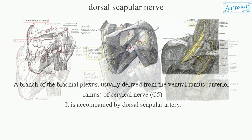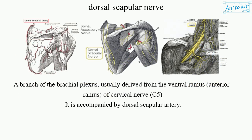Dorsal Scapular Nerve. A branch of the brachial plexus, usually derived from the ventral ramus, anterior ramus, of cervical nerve C5. It is accompanied by the dorsal scapular artery.